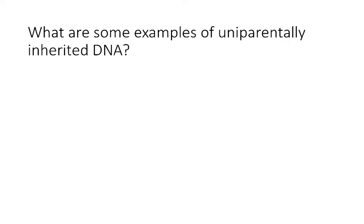We have talked about this before, so to refresh your memory and to practice recalling that information, please think about what are some examples of uniparentally inherited DNA. Remember, that means they only come from one of the parent organisms. Some examples we talked about last time: for plants, we talked about chloroplast DNA, and we said that in plants, this is used most commonly for an organelle genome.